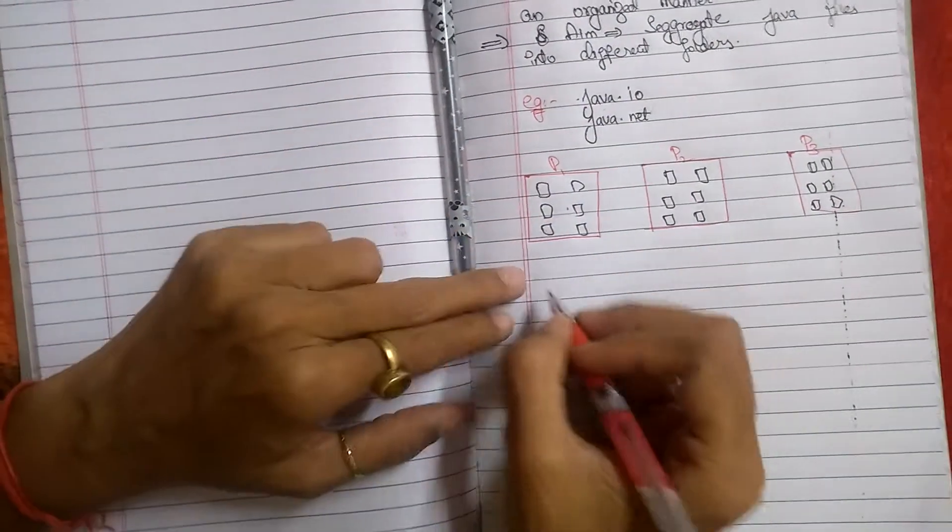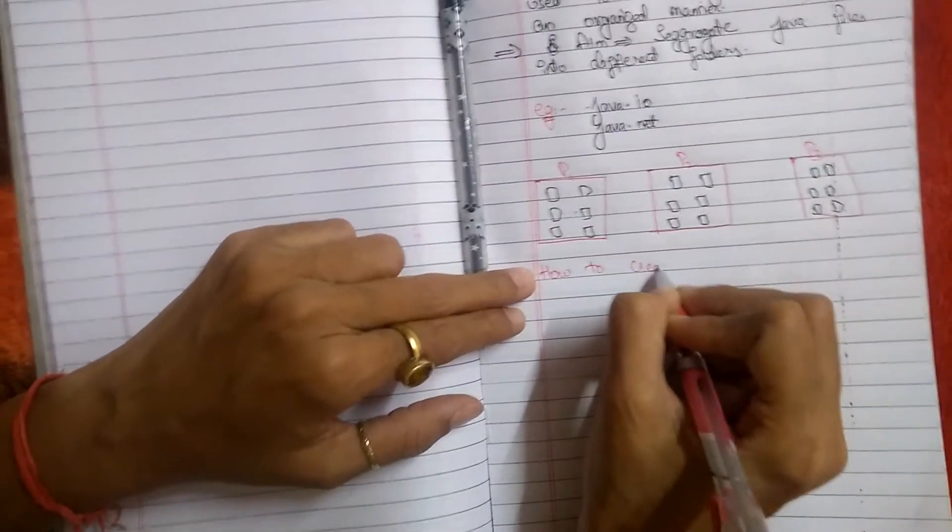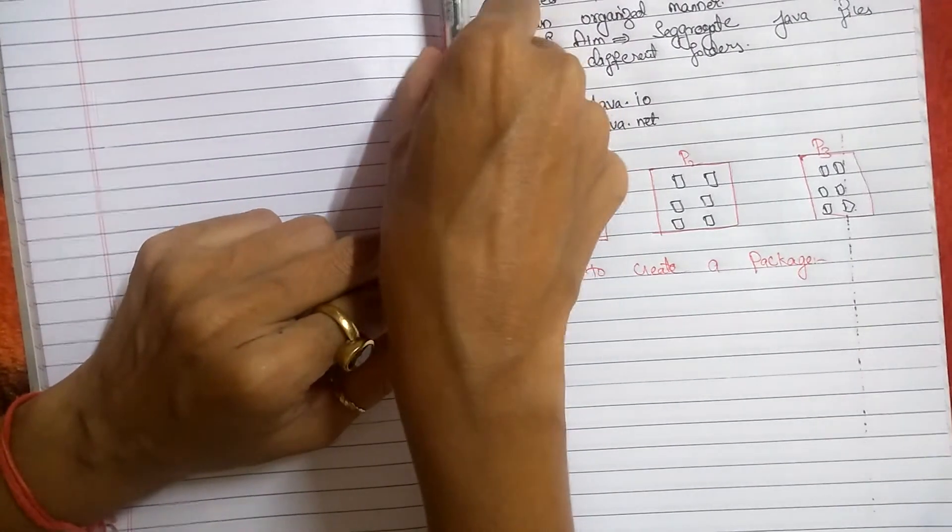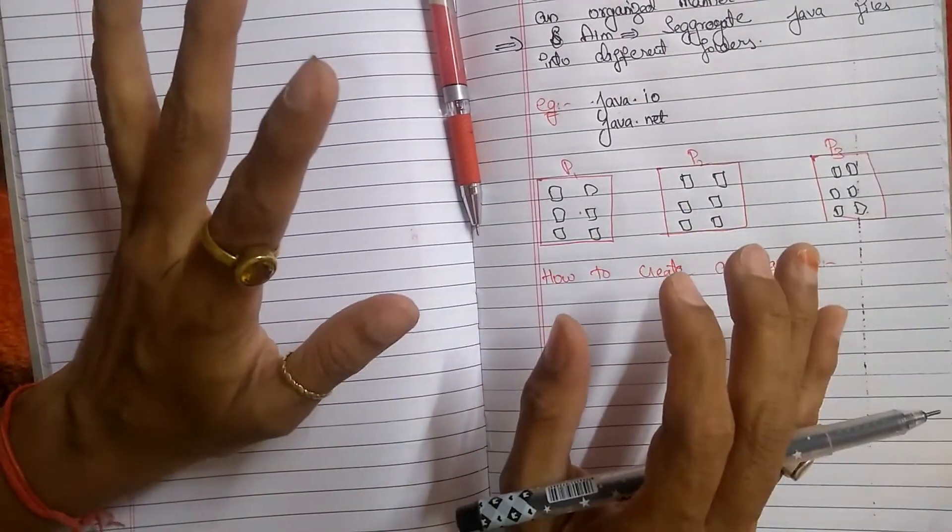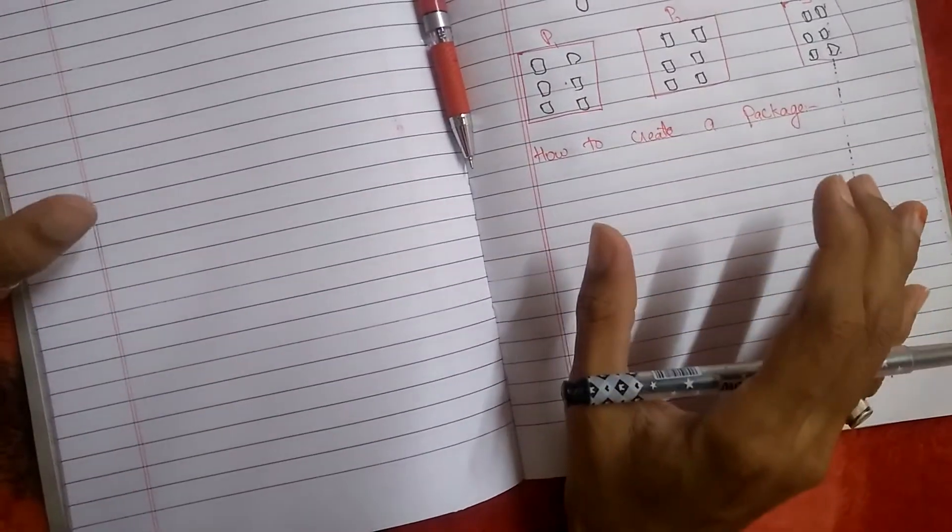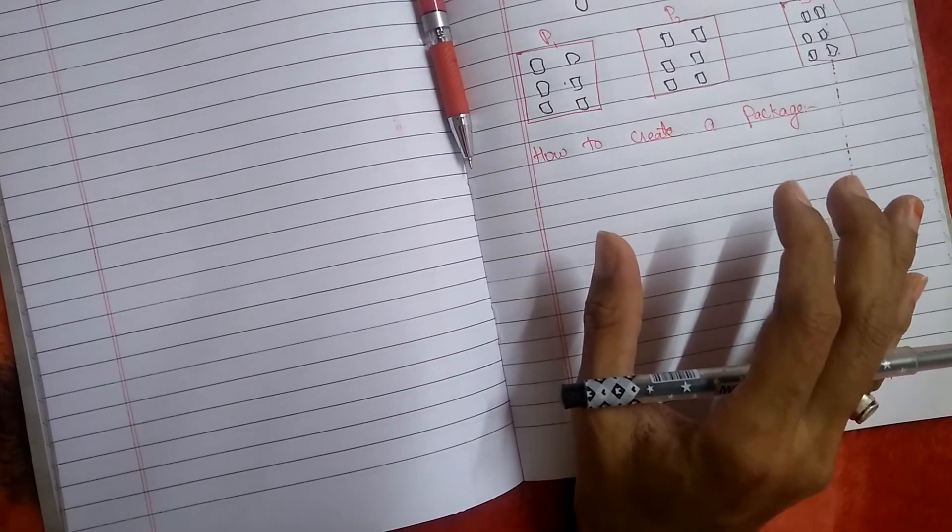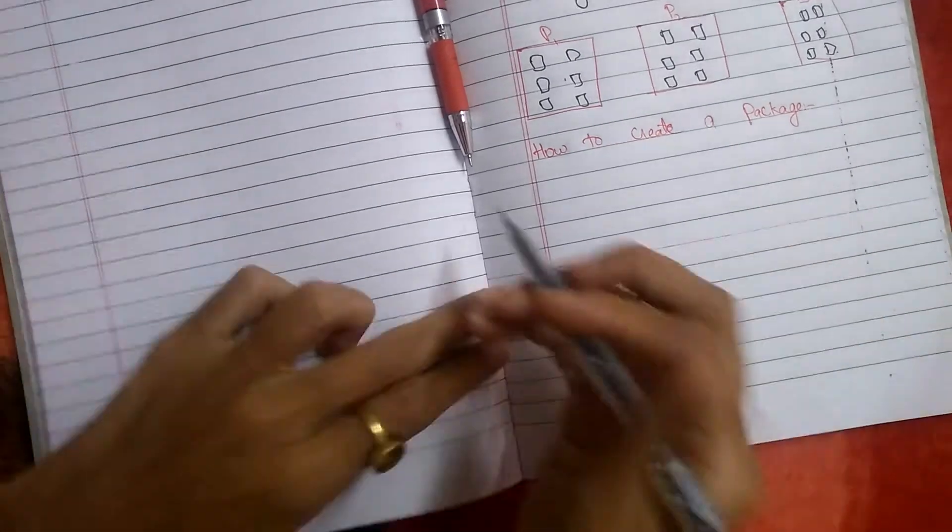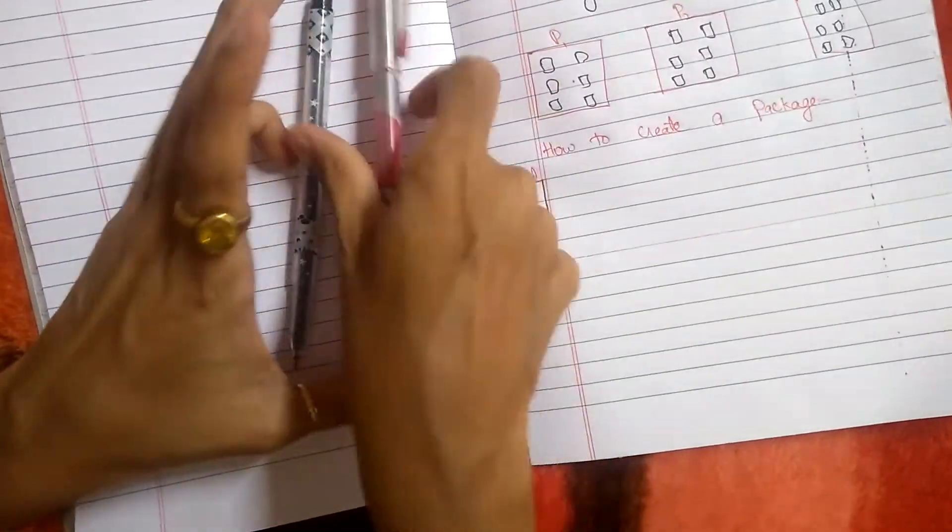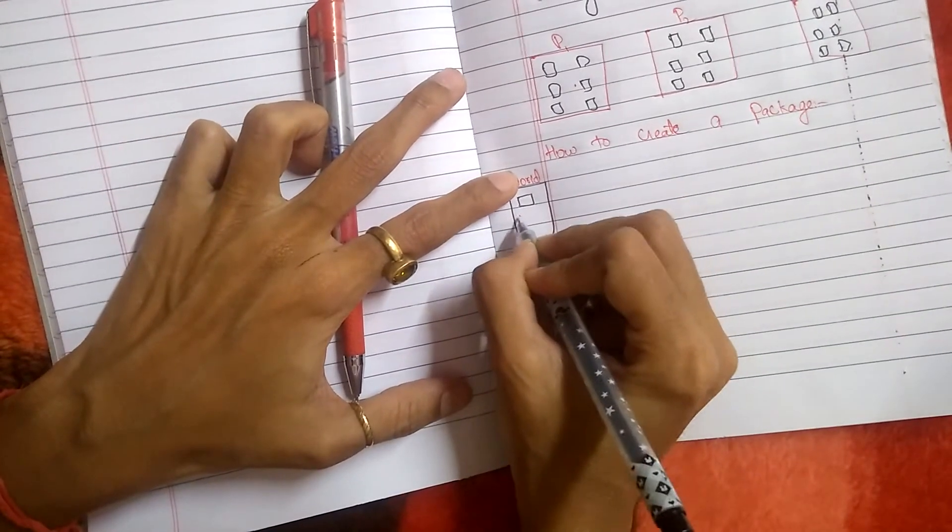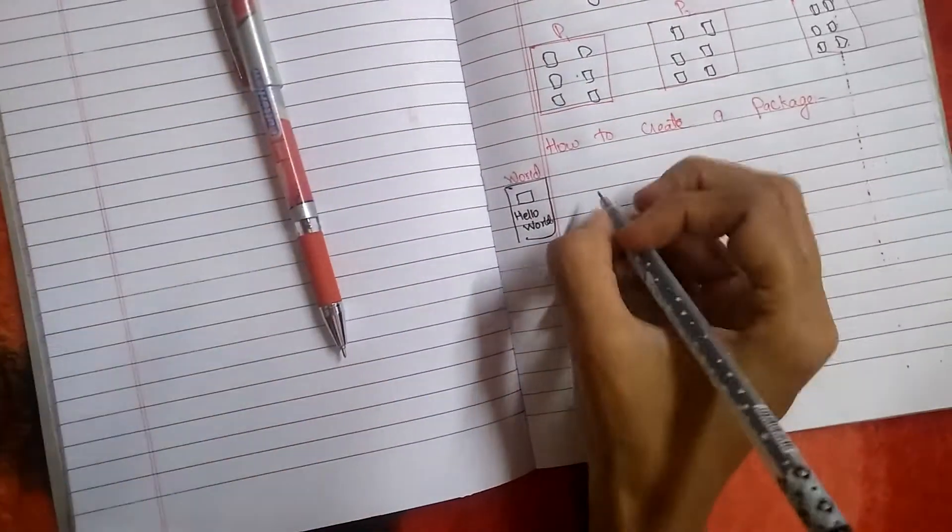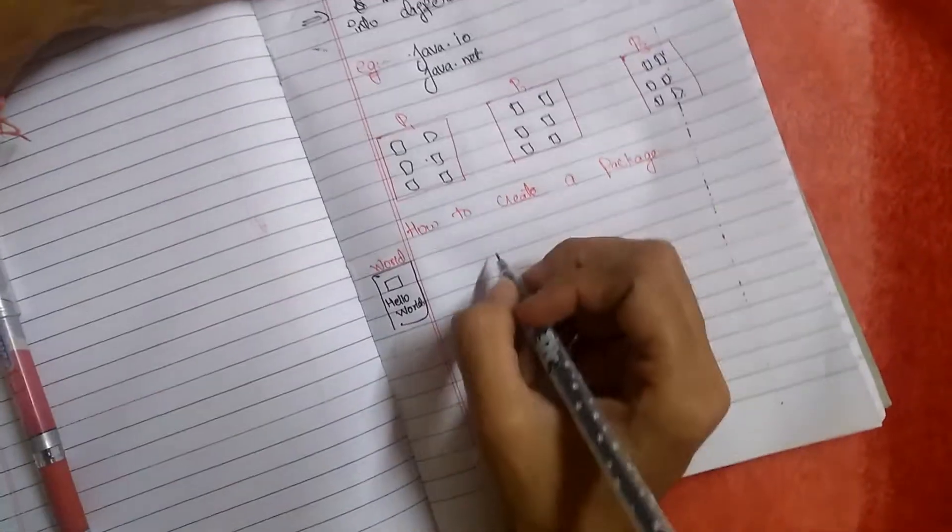Now, let us understand how to create a package. With the help of a program, you will understand. Suppose we have a file called HelloWorld.java, a basic program which we have done earlier also. We want to put this file HelloWorld.java into package world. So what will be the package name? Package name will be world. In which the class file will be HelloWorld.